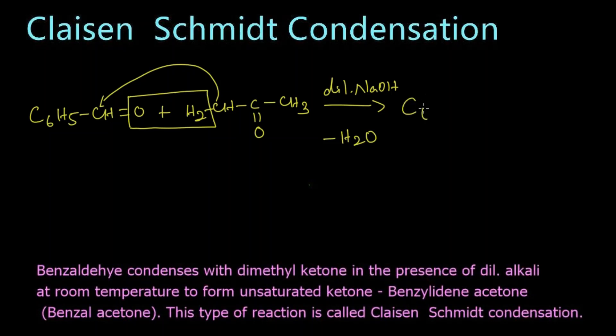The remaining things will get condensed. The CH will get attached to this carbon, so we get C6H5-CH=CH-C=O-CH3. The name of this compound is benzylidene acetone.